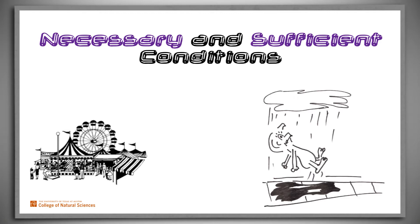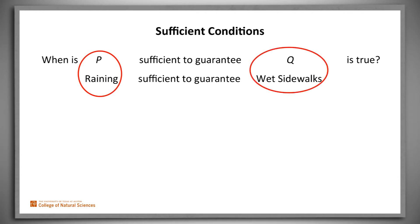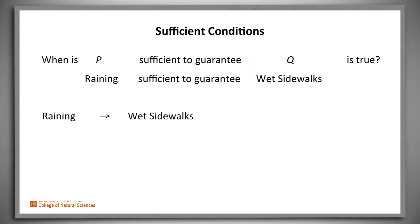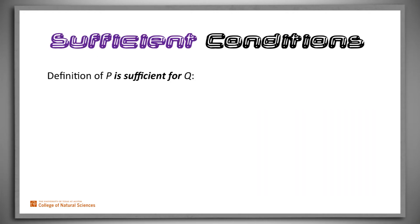Let's take a closer look at what we mean by necessary and sufficient conditions, starting with sufficient conditions. What does it mean for P to be a sufficient condition for Q? In our example, raining is sufficient to guarantee wet sidewalks — whenever P (raining) is true, Q (wet sidewalks) must also be true. That's exactly what the Boolean operator "implies" does: P implies Q. P is sufficient to guarantee Q. This is clear from the truth table definition of implies: P implies Q is true if and only if whenever P is true, Q must also be true. To summarize: P is sufficient for Q means P implies Q.